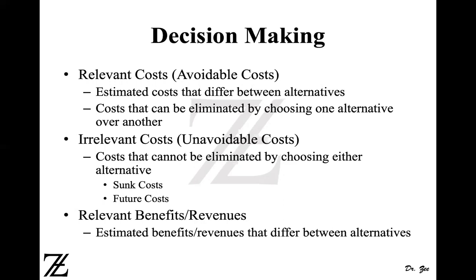On the other hand, there are irrelevant costs. In the job example, the car you already bought is an unavoidable cost — it's already been incurred and shouldn't affect your decision. Also, if you eat breakfast at Starbucks every day regardless of where you work — whether downtown or close to home — that breakfast cost is the same either way, making it irrelevant to your decision and unavoidable.